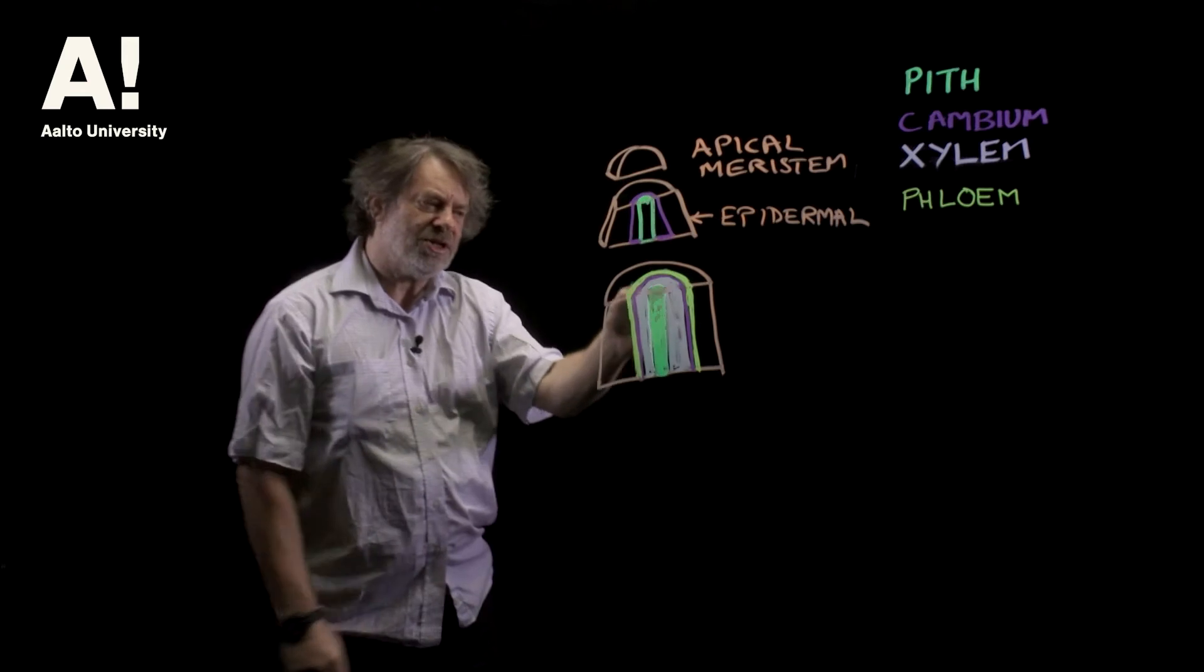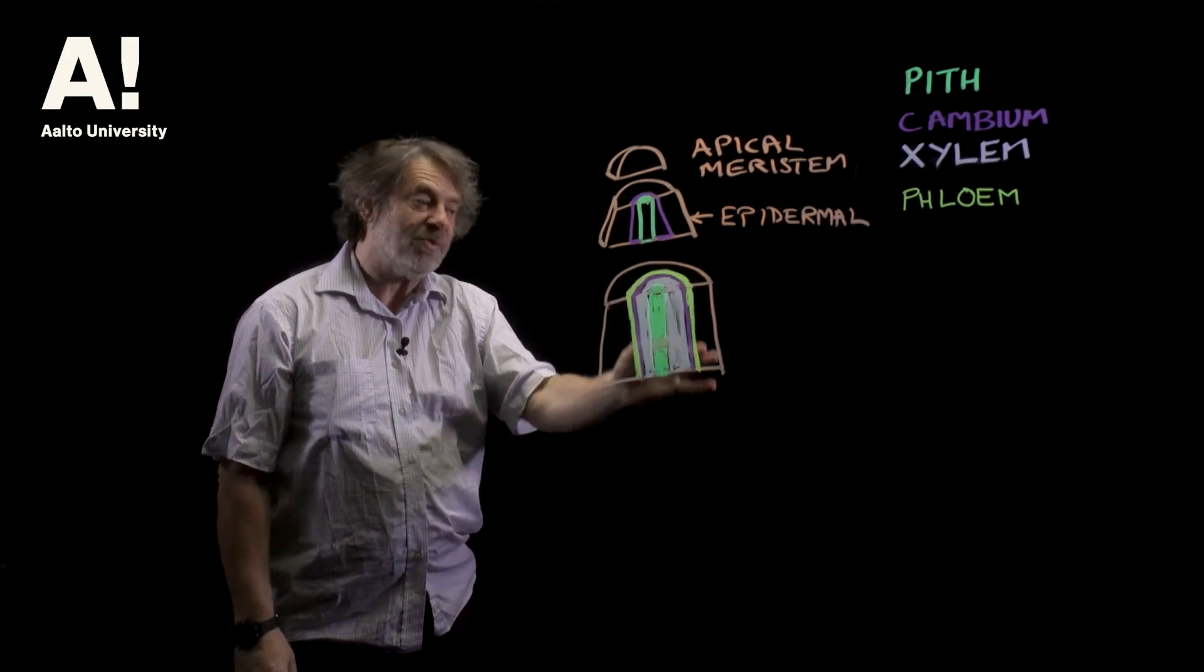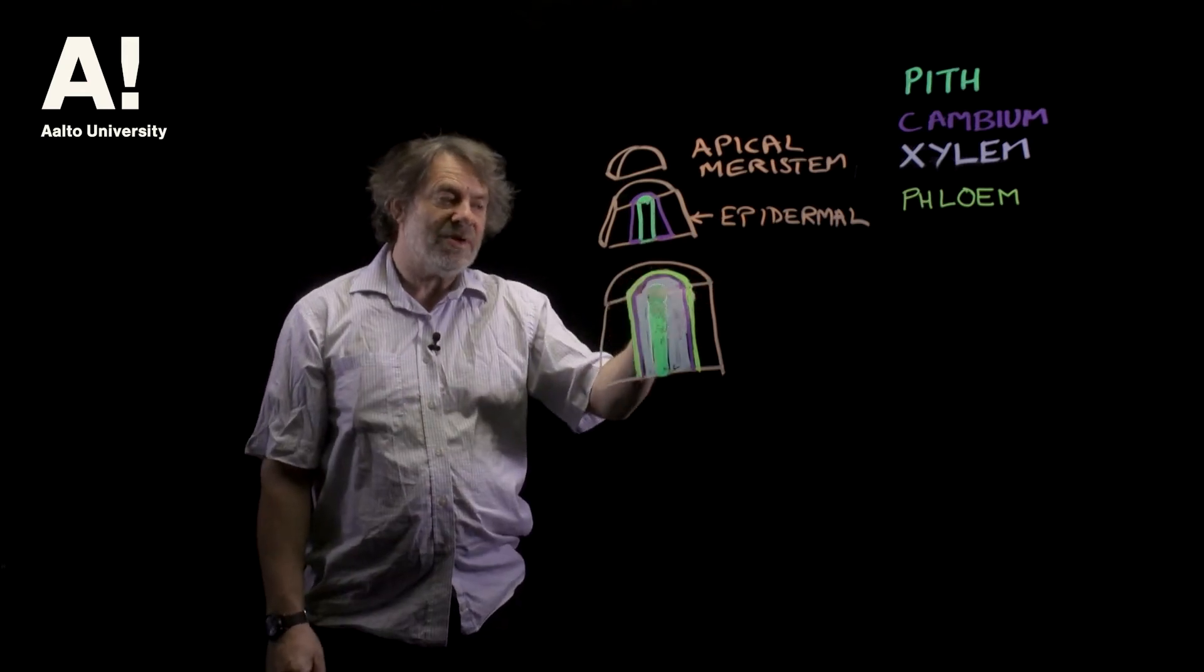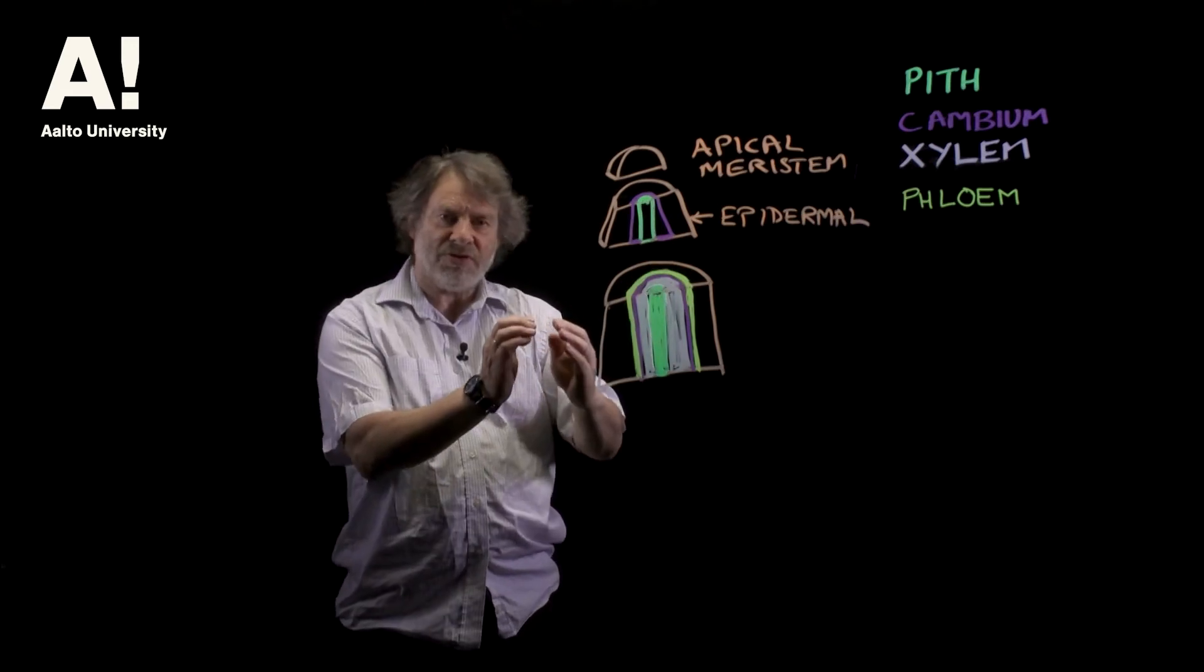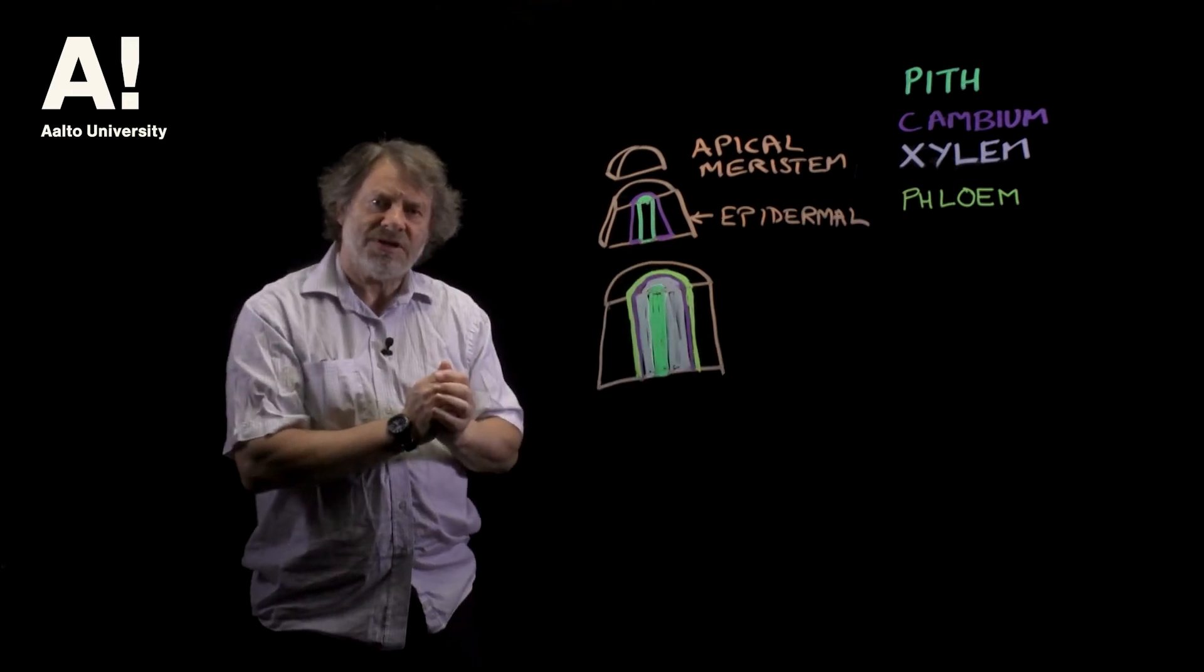Then we have this xylem tissue which is wood, that's the bit we're interested in. The cambial layer is outside, so the cambium is growing outwards and laying down the xylem tissue.